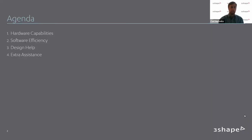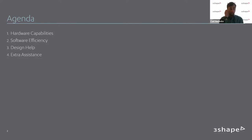To go through our agenda today, there are many ways a lab can efficiently use 3Shape. There are a couple of different categories to look at for how you can become more efficient with your setup. First is hardware capabilities, broken down into a couple of different segments. We're looking at your scanner itself and the speed and accuracy of what your scanner can do, because that takes time to scan. Utilizing the latest technology decreases the time spent in front of the scanner and allows you to do other tasks throughout the lab.